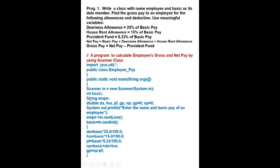Employee name is alphabetical and is a set of characters, so the data type is String. Now double: DA (dearness allowance), HRA (house rent allowance), PF (provident fund), GP (gross pay), NP (net pay). We don't know gross pay, so we take it as 0. We don't know net pay, so we also take it as 0.